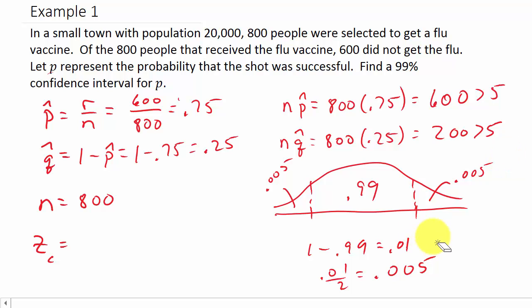Now to find our Z sub C, we need this Z value. If you notice, the area to the left of this is the 0.99 plus the 0.005, and that gives us 0.995. That's the area to the left of this Z sub C that we're looking for.